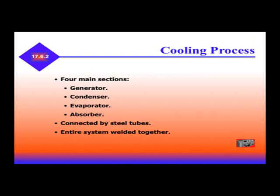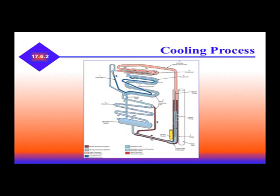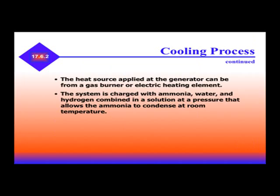Again, we have four main sections: generator, condenser, evaporator, and absorber. It's all connected by steel tubes, and the entire system is welded together. The heat source is applied at the generator and can be from a gas burner or electric heat element. The system is charged with ammonia, water, and hydrogen combined in a solution at pressure, which allows the ammonia to condense at room temperature.